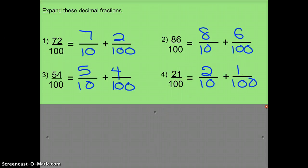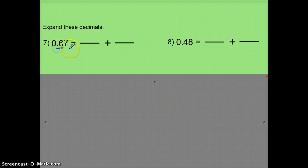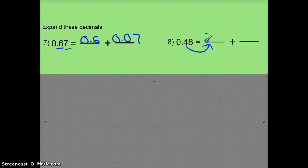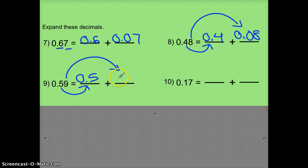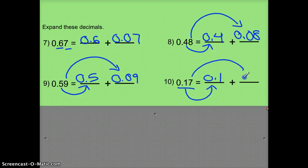Let's look at doing this in just decimals. 6 10ths plus 7 100ths. Tenths: 0 and 4 10ths. Hundredths: 0 and 8 100ths. Again: 0 and 59 100ths. Tenths and hundredths: 0 and 9 100ths. One more: 1 and 17 100ths is going to equal 1 10th plus 7 100ths.